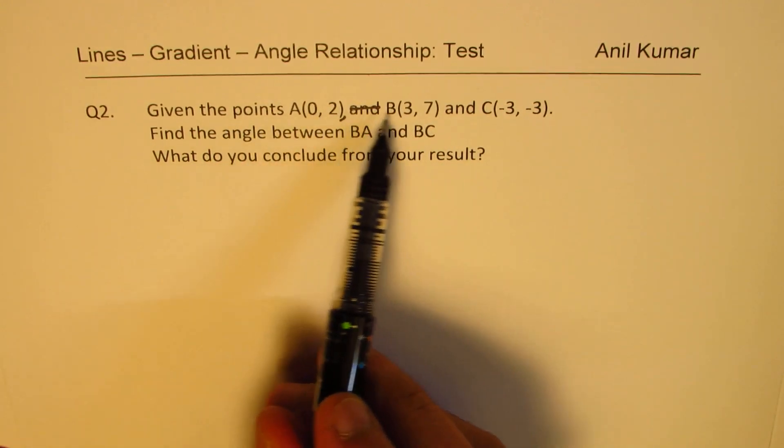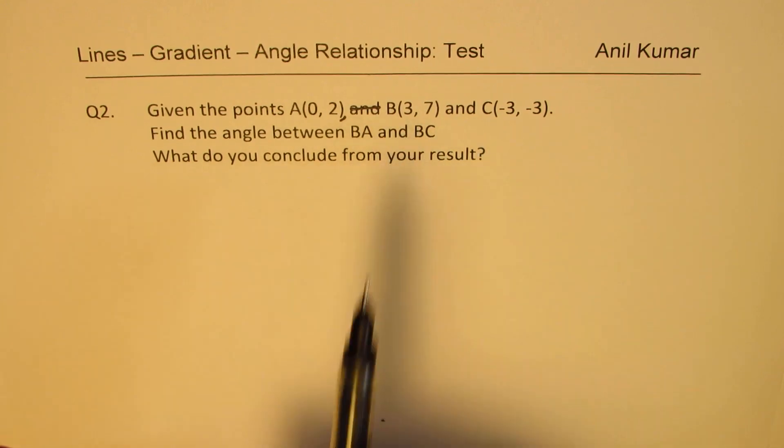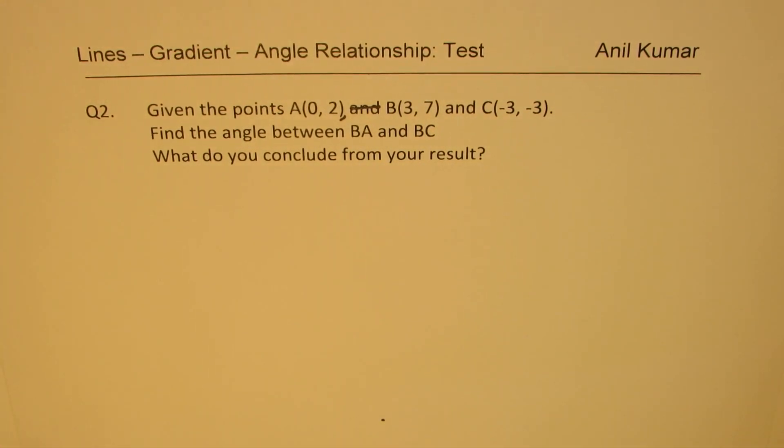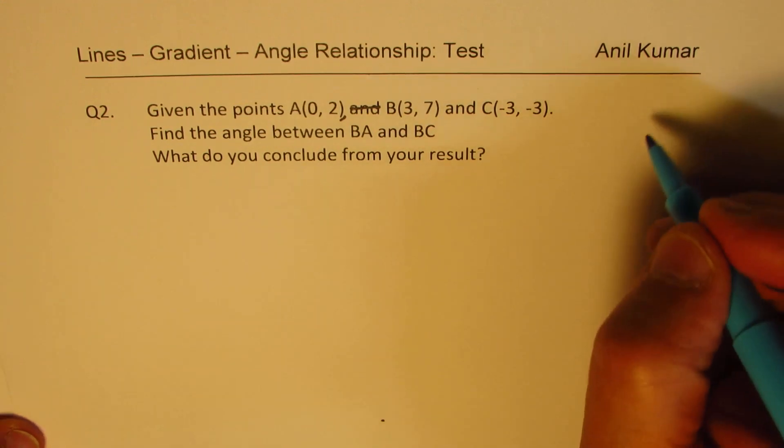So we have three different points, and we need to figure out the angle between BA and BC.